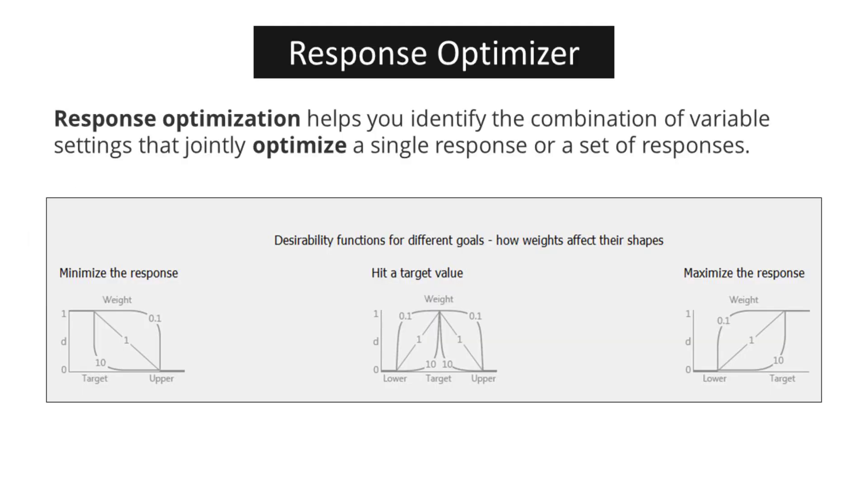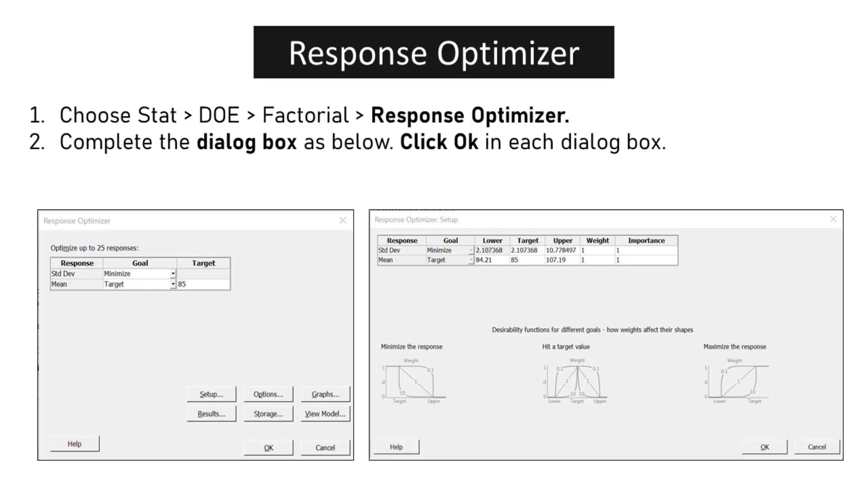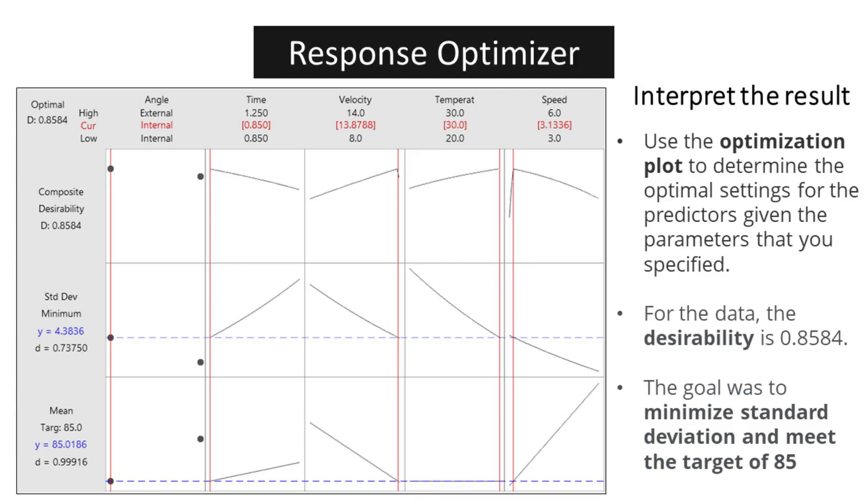Response optimization, also referred to as parameter optimization, plays a vital role in various fields such as engineering, science, and business. It involves the systematic exploration of different variable settings to identify the combination that maximizes a single response or a set of responses. Choose STAT, DOE, factorial, response optimizer. Complete the dialog box as below. Click OK in each dialog box. After analyzing the optimization plot, the optimal settings for the predictors have been determined based on the specified parameters. The desirability for the data has been calculated to be 0.8584, indicating a high level of desirability. The goal of minimizing the standard deviation while meeting the target of 85 has been achieved through the identified settings. By utilizing the optimization plot, we were able to identify the combination of predictor settings that resulted in the desired outcome. This process allowed us to make informed decisions and optimize the predictors to meet our objectives. The desirability value of 0.8584 reflects the effectiveness of the chosen settings in achieving our goals.